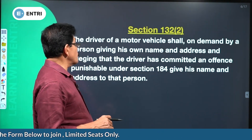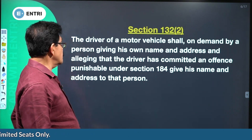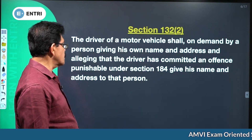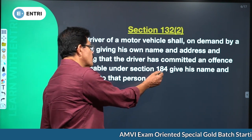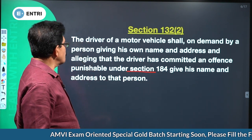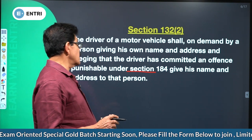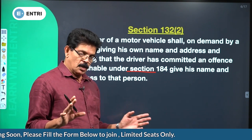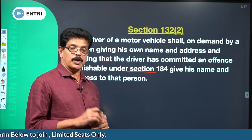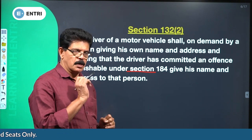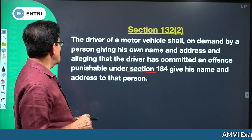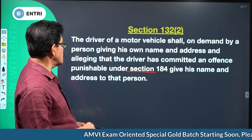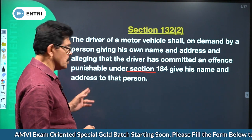If the driver has committed an offence punishable under Section 184, he must give his name and address. Section 184 deals with dangerous driving. The driver of a motor vehicle shall, on demand by a person giving his name and address and alleging that the driver has committed an offence punishable under that section, give his name and address to that person.